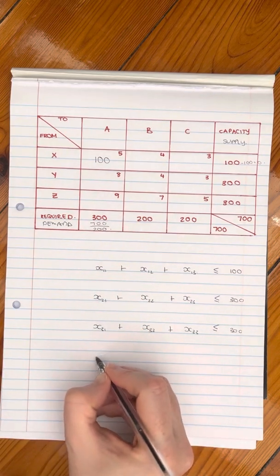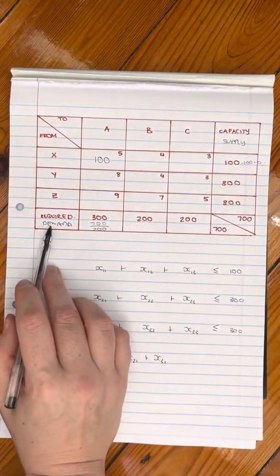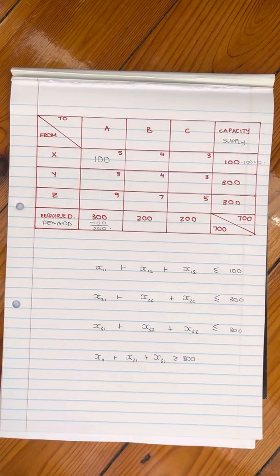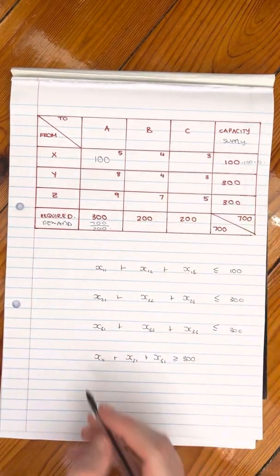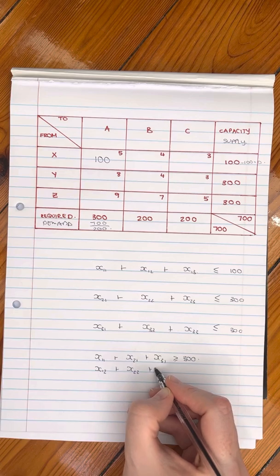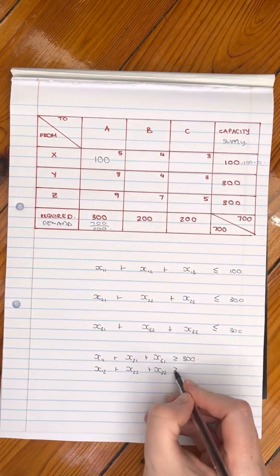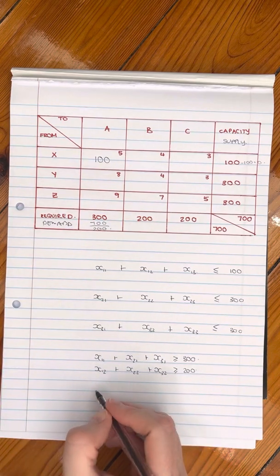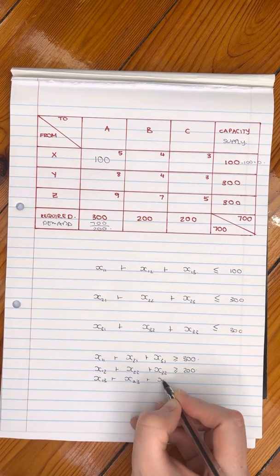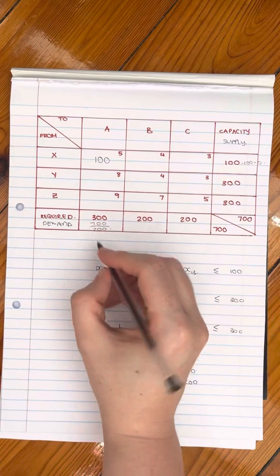For our columns, we have x11 plus x21 plus x31 — that's the first column — and that is the demand; it has to have 300, so it is greater than or equal to 300. Those must produce at least 300 of them. The same for the rest of the columns: x12 plus x22 plus x32 must be greater than or equal to 200, because that's the demand. Just a reminder to remember what this is actually telling you, so you remember why you're doing this. This first constraint has been met with this being 100.